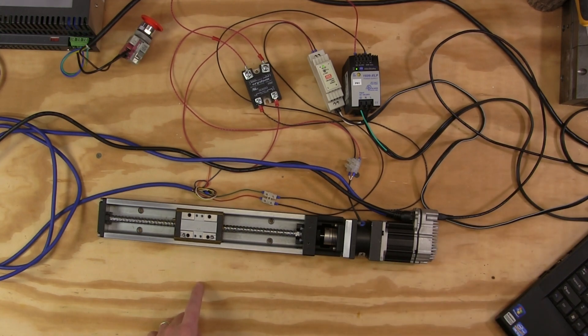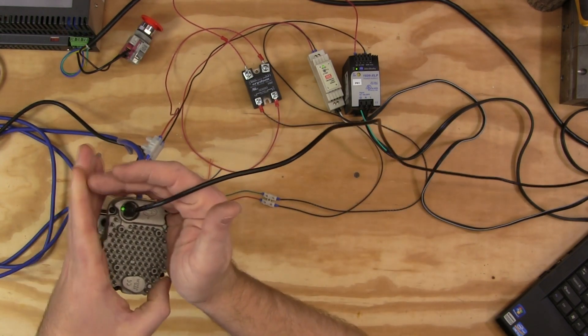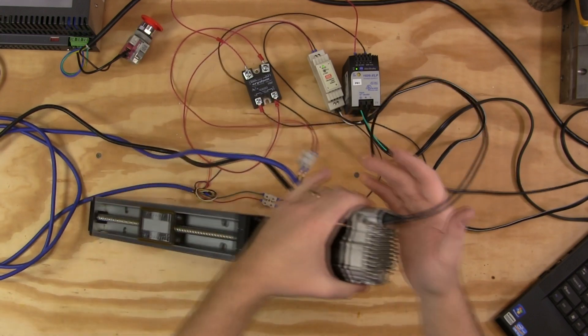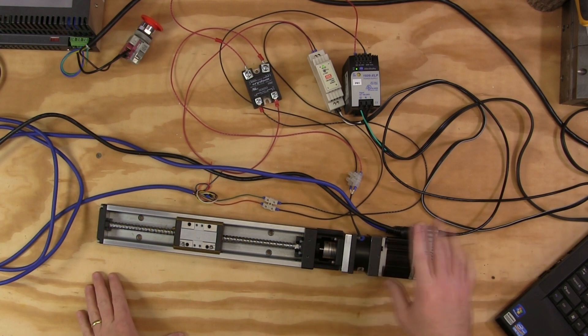So we won't actually see this move unless I force it to move from the controller on the PC. So I'm going to enable the motor. Let's listen. So we've got our click, which means that our brake has released and now we've got our flashing green light.